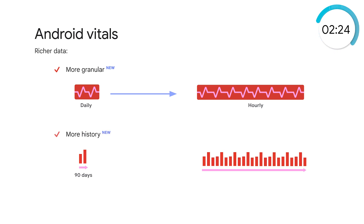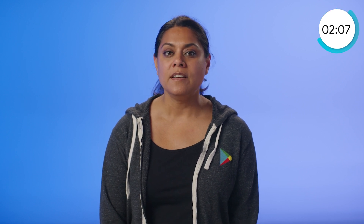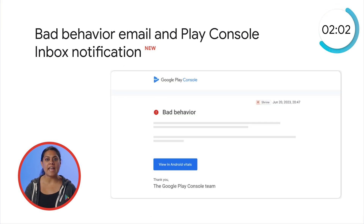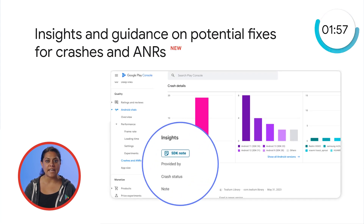Android Vitals metrics are now extended to include the past three years of data — that's a huge bump! Vitals is also now more visible from directly within Android Studio as part of App Quality Insights, so you can jump from stack trace to code and debug stability issues with ease. New bad behavior notifications that you can opt into make staying up-to-date on any emerging issues easier than ever. And Android Vitals now gives you insights and potential fixes for crashes and ANRs, including notes from third-party SDK developers.